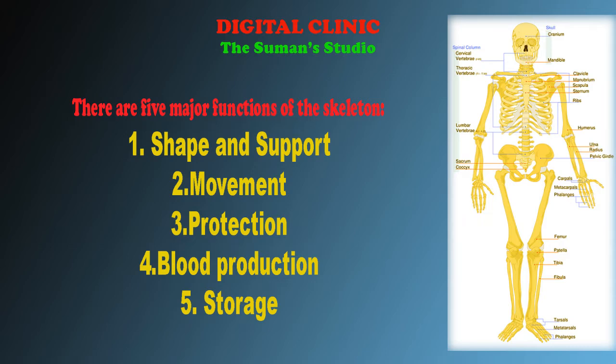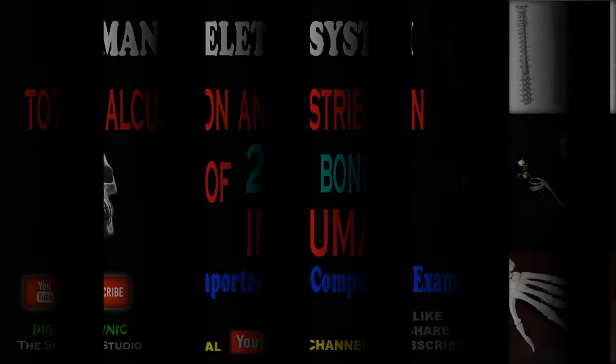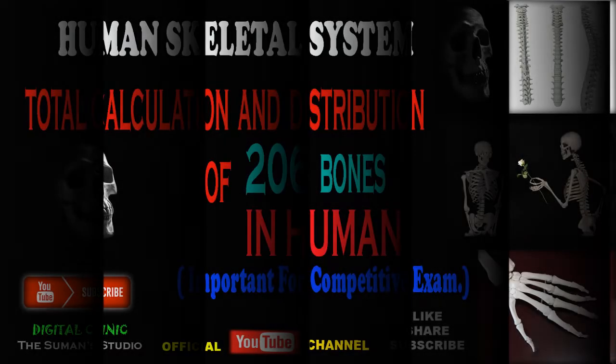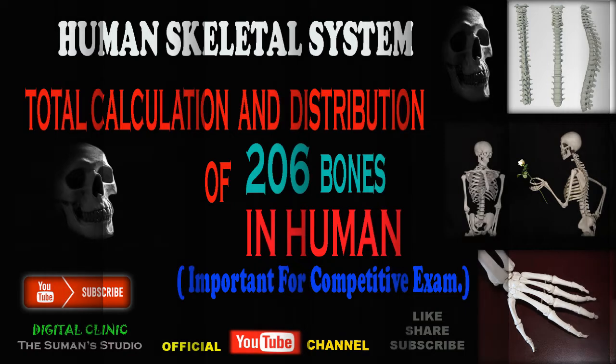This system has five primary functions: number one, shape and support; number two, movement; number three, protection; number four, blood cell production; and number five, storage. Today I am going to discuss the distribution of bones — the total calculation of 206 bones of the human body. Now let's start.